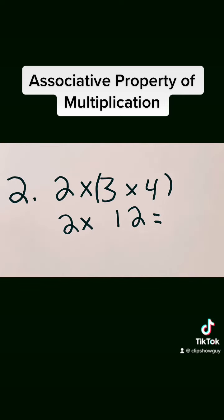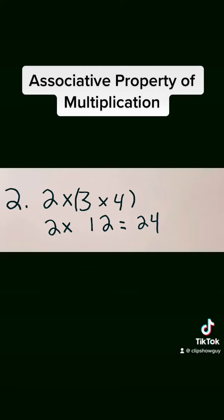I could also start by doing 3 times 4 first. 3 times 4 equals 12, so I'm left with 2 times 12. 2 times 12 equals 24.